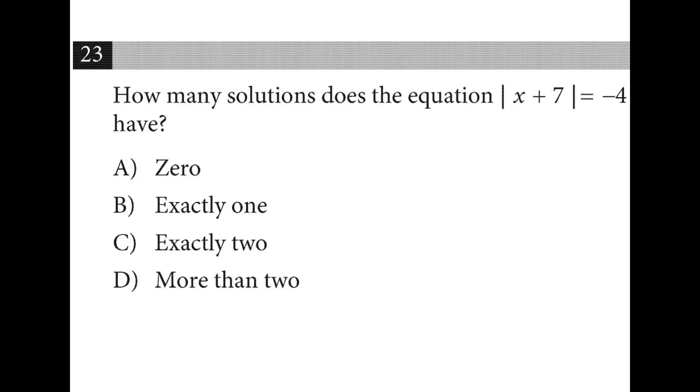The definition of absolute value is distance from 0, which will never be negative. So this one has 0 solutions because negative 4 is on the right side of the equation.